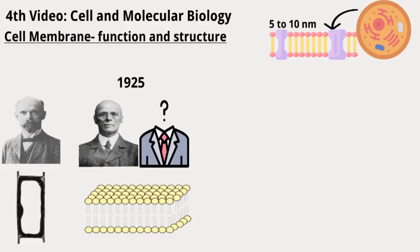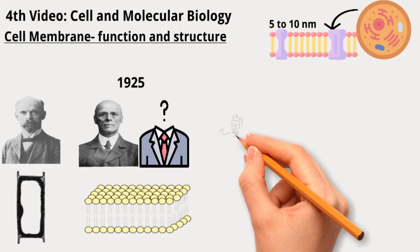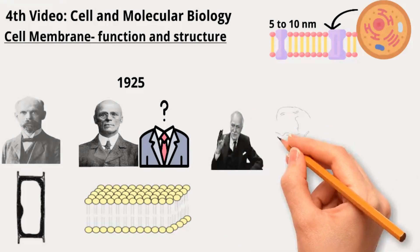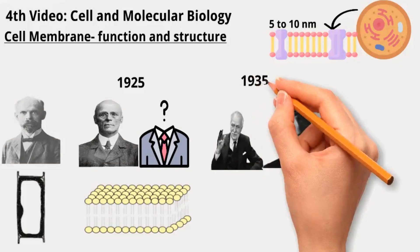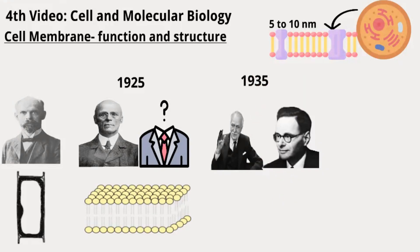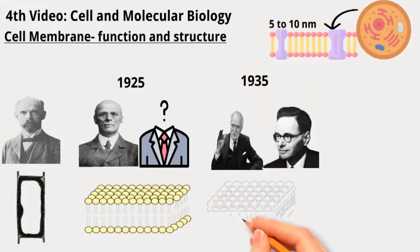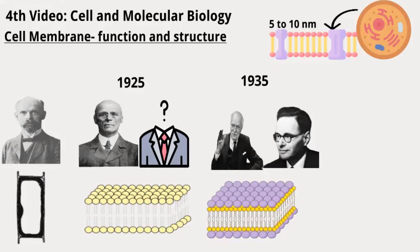However, it was later discovered that there is more to membrane structure than just lipids. Hugh Davson and James Danielli proposed in 1935 that the membrane had a lipid bilayer surrounded by layers of globular proteins.